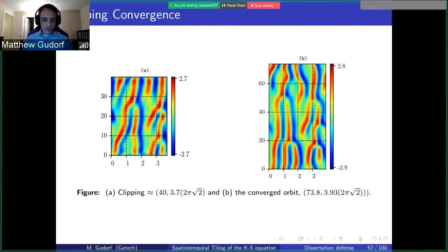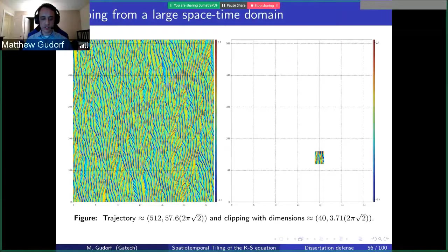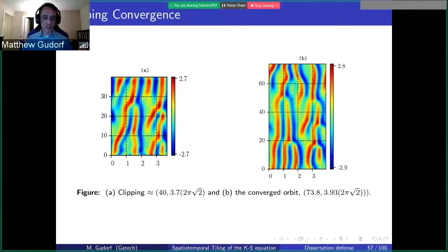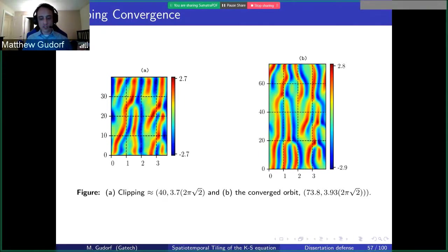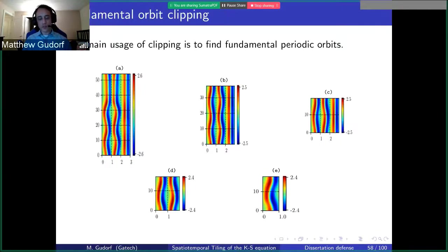You would want to choose a clipping that appears to be somewhat periodic — the worse the initial condition, the more likely the numerical method is to fail. In this case, we start with a clipping on some spatiotemporal domain, run the optimization, and find an invariant two-torus that approximates it. The tile size changes, and one of the big open questions in this research is whether the torus on the right actually reflects the pattern we started with — something I'm looking to describe in the future.